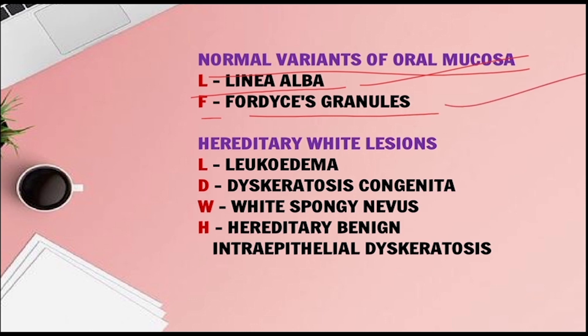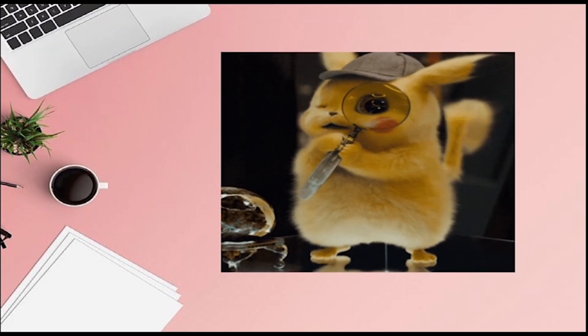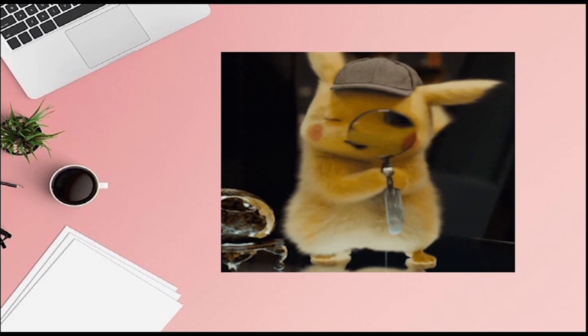Now hereditary white lesions — Luke has inherited all this. L for Leukoedema, D for Dyskeratosis Congenita. Luke is dressed in white: W for White Sponge Nevus, H (hat) for Hereditary Benign Intraepithelial Dyskeratosis.